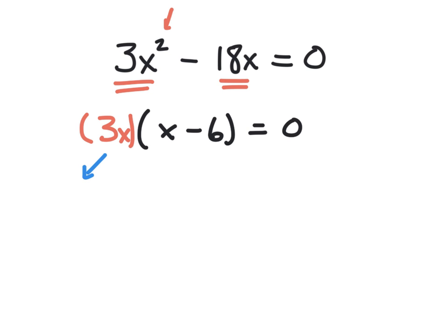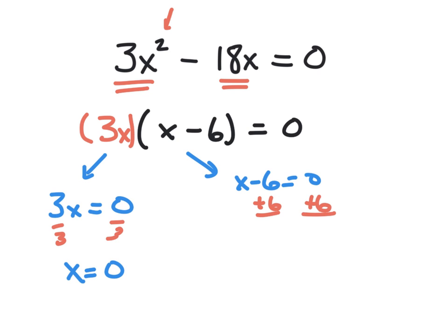We have two things that are multiplied together. We have 3x and we have x minus 6. One or both of those has to be zero. So I'm going to set 3x equal to zero and solve. You divide it by 3 and you get x equals zero. And I'm going to set this guy equal to zero, x minus 6. And you add 6 to both sides and you get x equals 6. So my solution set is zero and 6. Keep in mind, this was a GCF. Sometimes you can only factor with GCF. So always look for GCF.